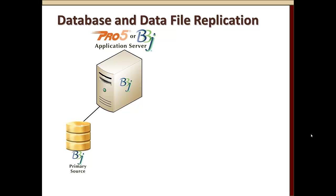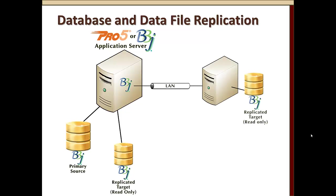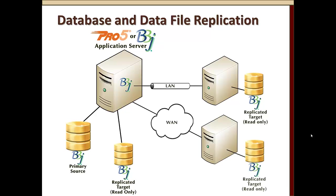We begin with either a Pro5 or BBJ application server. Your interpreter can be either Pro5 or BBJ, as long as you're using the BBJ BASIS database as your primary data source. You can then replicate that on the same machine, across the local area network to another machine, or across the wide area network — perhaps to a cloud machine. All replicated targets are read-only, and you can do all three simultaneously.